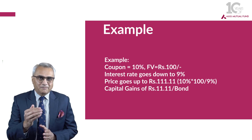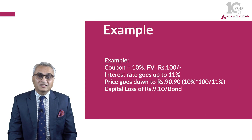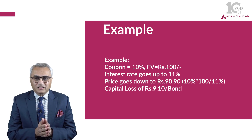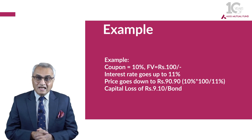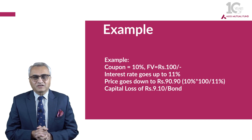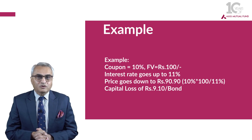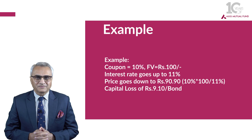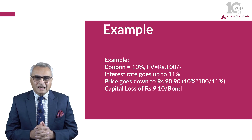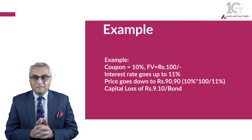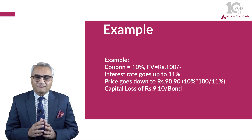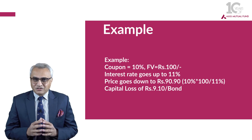Now let us take the reverse example where interest rates have gone up instead of going down. With a 10% coupon, if interest rates go up to say 11%, the underlying value of the security is 10% × 100 ÷ 11%, which comes to 90 rupees and 90 paisa. That means there will be a capital loss of 9 rupees and 10 paisa per security when interest rates go up after your original investment.